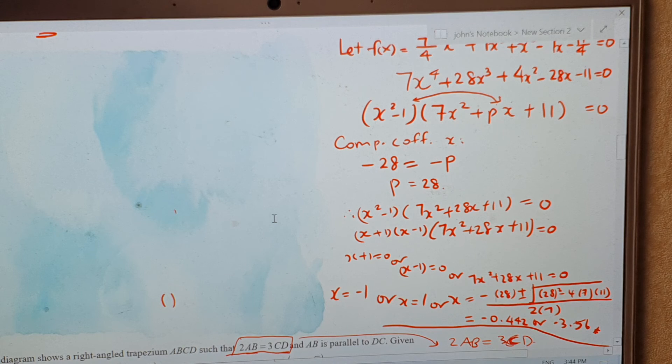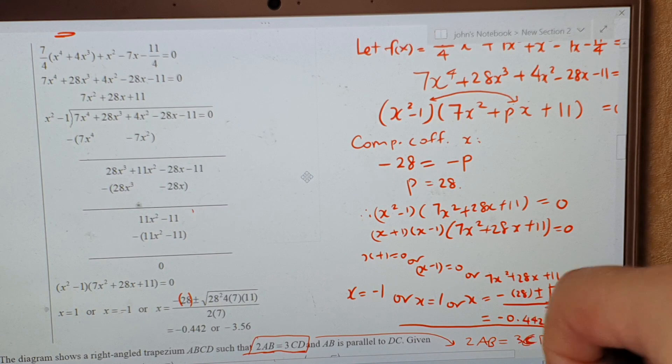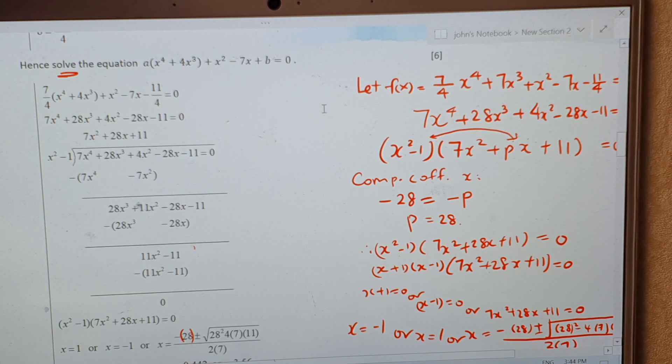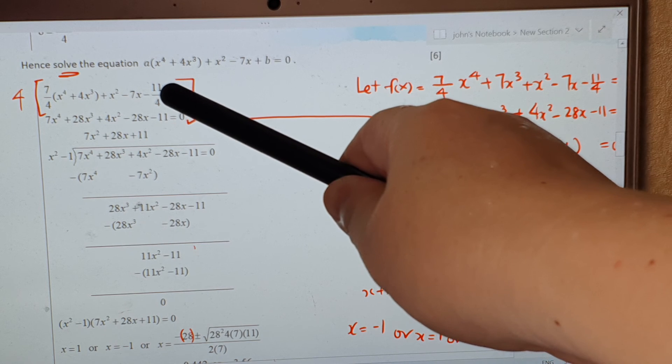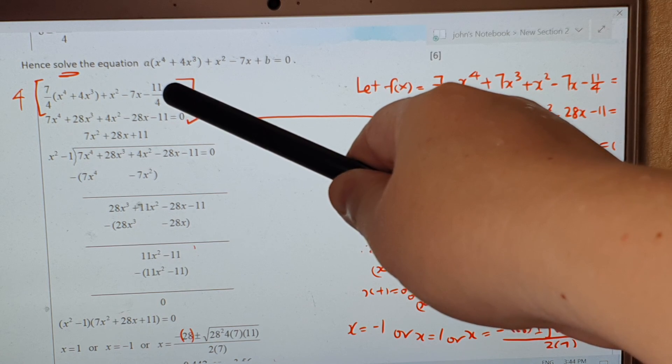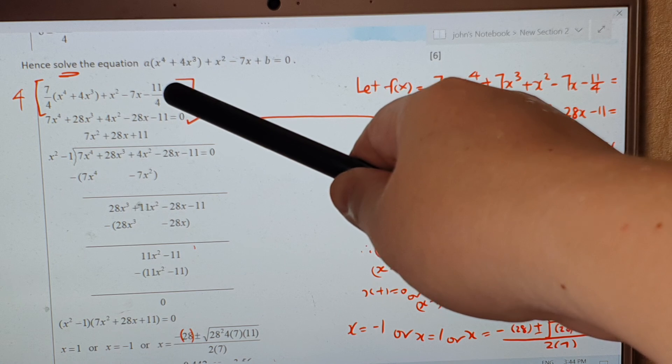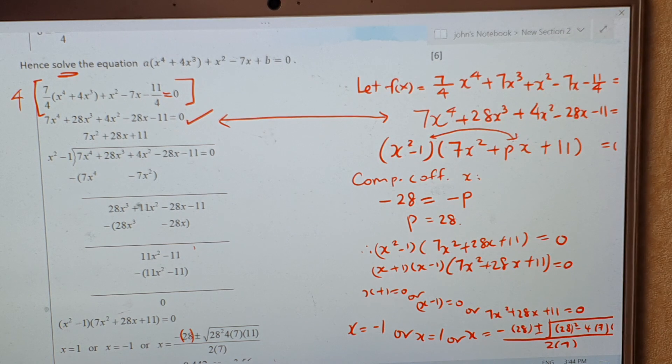Now you can also use what we call the long division method. This step here is the same as what I've done here, that means I multiply throughout by 4 to get rid of the denominator. I can only do that because this is an equation. If this is not an equation, that means if it's just like that without the equal sign, which is what we call an expression, then you cannot multiply throughout by 4. You can only do this if this is an equation, which is the case here.